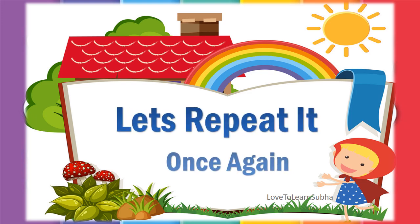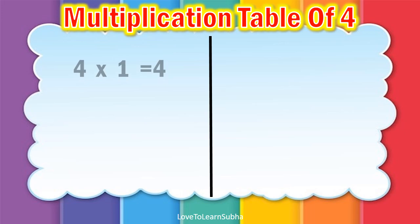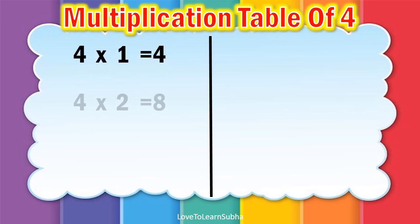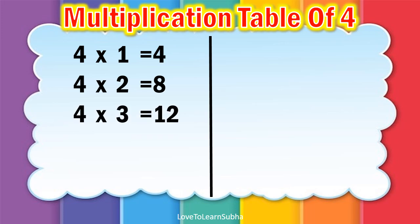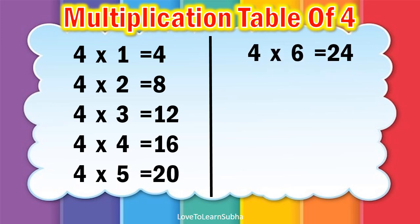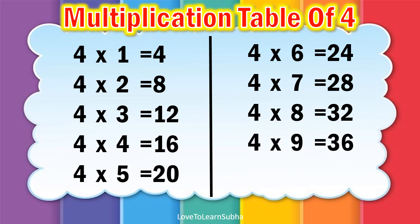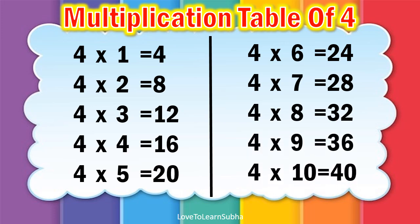Now let's repeat it once again. 4-1s are 4. 4-2s are 8. 4-3s are 12. 4-4s are 16. 4-5s are 20. 4-6s are 24. 4-7s are 28. 4-8s are 32. 4-9s are 36. 4-10s are 40.